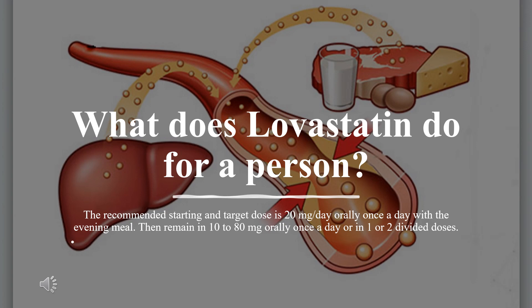What does Lovastatin do for a person? For adult patients requiring an LDL-C reduction of 25 percent or greater, or prevention of cardiovascular disease, the recommended starting and target dose is 20 mg per day orally once a day with the evening meal. The dose range is 10 to 80 mg orally once a day or in one or two divided doses.